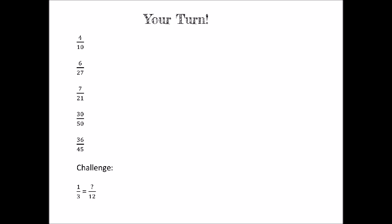Let's do a few more together. You can either pause the video and work through each one in turn, or pause after each question and check the answer. Let's begin by simplifying 4 tenths. The highest common factor of 4 and 10 is 2, so we divide both parts by 2: 4 divided by 2 is 2, and 10 divided by 2 is 5. Now simplify 6 twenty-sevenths. Six and 27 aren't both even, but their highest common factor is 3, so we divide both parts by 3: 6 divided by 3 is 2, and 27 divided by 3 is 9, giving us 2 ninths.